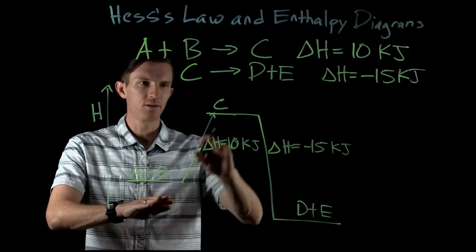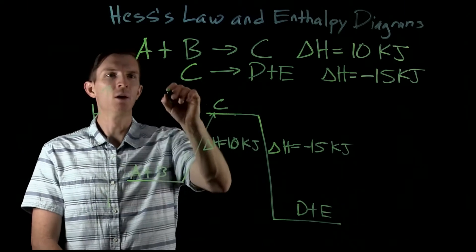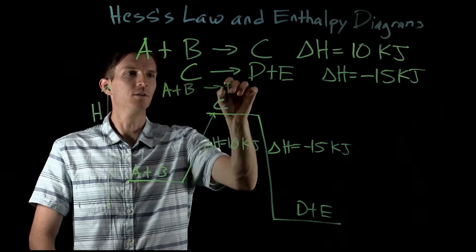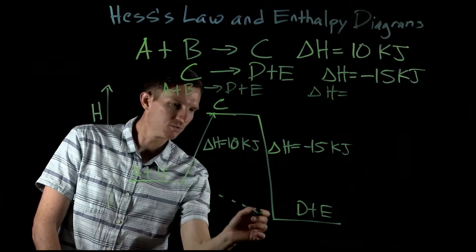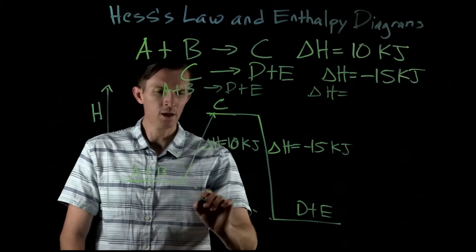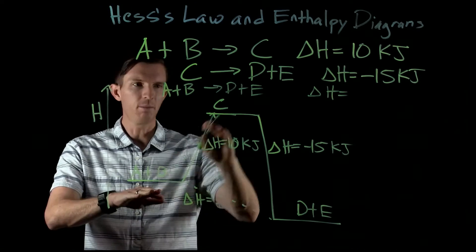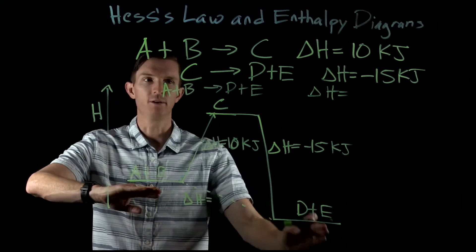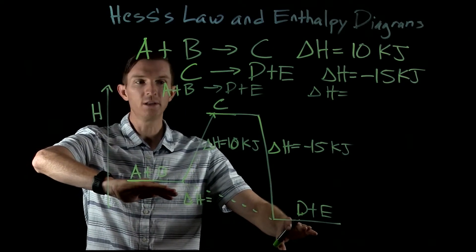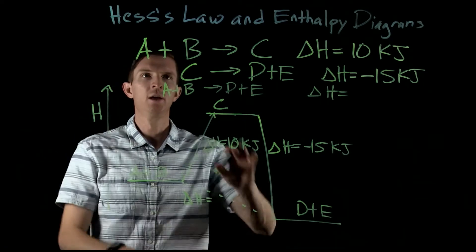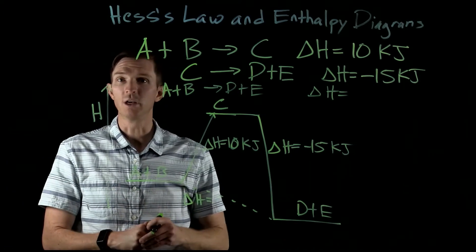Now instead of thinking about this two-step pathway — A and B going to C, then C going to D plus E — what if we went straight from A and B to D and E? We know enthalpy is a state function, so it doesn't matter what path we took to get from reactants to products. All that matters is where we start and where we end up. The overall enthalpy change will be the same.